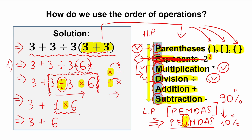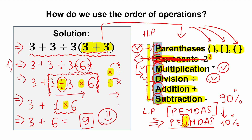Our last step is addition and subtraction. We have 3 plus 6 equal to 9. This is our answer. Order of operations is great because we don't end up with two different answers — we have only one: 9. We can be confident that this is the correct answer with 100% probability.